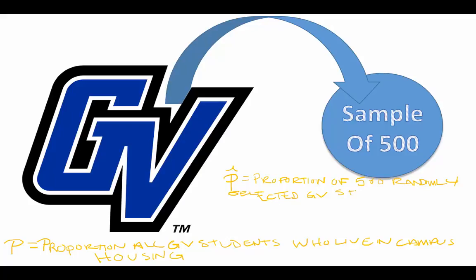My success is still people who live in campus housing. So P hat represents the proportion of 500 randomly selected GVSU students who live in campus housing.